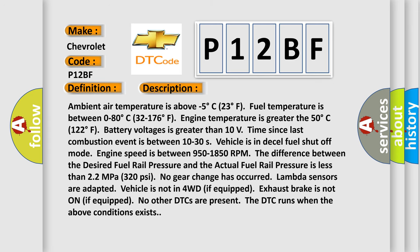Ambient air temperature is above minus 5 degrees Celsius (23°F). Fuel temperature is between 0 to 80 degrees Celsius (32 to 176°F). Engine temperature is greater than 50 degrees Celsius (122°F). Battery voltage is greater than 10 volts. Time since last combustion event is between 10 to 30. The vehicle is in diesel fuel shutoff mode. Engine speed is between 950–1850 RPM. The difference between desired and actual fuel rail pressure is less than 22 megapascals (320 psi). No gear change has occurred, lambda sensors are adapted, vehicle is not in 4WD, exhaust brake is not on if equipped, and no other DTCs are present. The DTC runs when the above conditions exist.